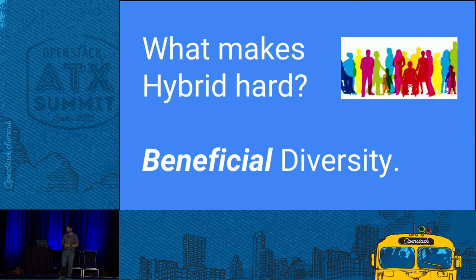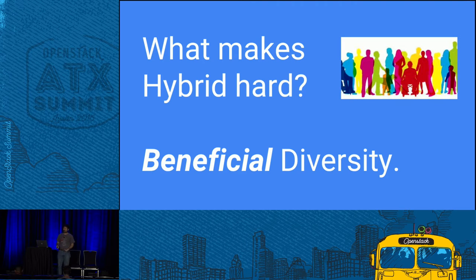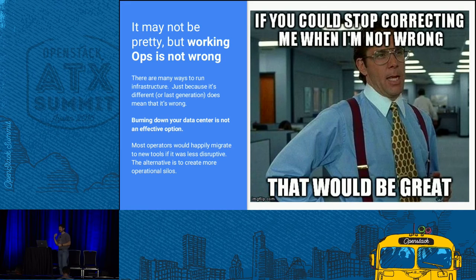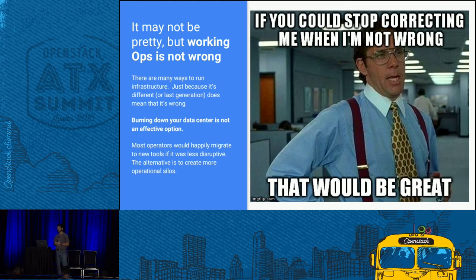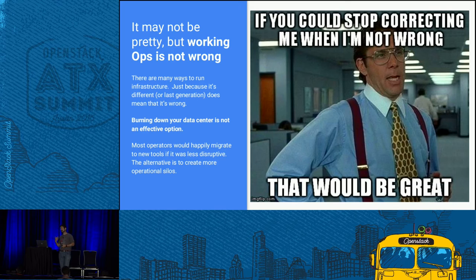We need beneficial diversity. Hybrid is hard because everything is a little bit different — but that's not bad. In open source, diversity is the key to strengthening community, and it's key to strength in operations too. The choices people have made aren't wrong. Most people running data centers deploy servers, get things done — maybe not as efficiently as they'd like — but it works, and they do it that way for a reason. Walking in and telling them they're idiots for not using cloud-native applications is the wrong message.